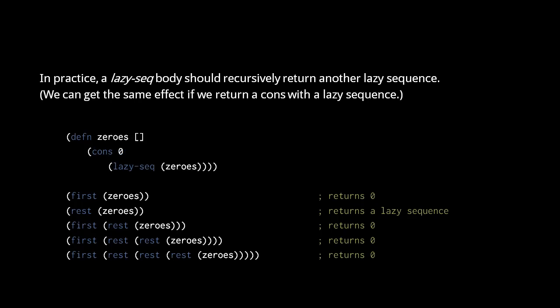Now, note that we would get the same effect if we swapped the call to cons with the call to lazySeq. In this version, the zeros function directly returns a cons, and this cons holds the value 0 and references a lazySeq which recursively generates an identical cons. Either way we do it, both solutions work equally well.